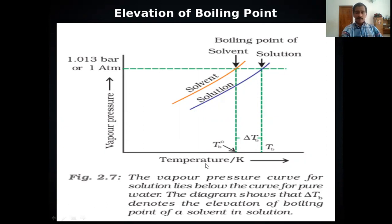Vapor pressure is plotted against temperature. The orange curve represents the vapor pressure curve of the solvent. As temperature increases, vapor pressure of the solvent increases, and at the point where vapor pressure equals one atmosphere (atmospheric pressure), the corresponding temperature is the boiling point of the solvent, represented as T⁰_B.